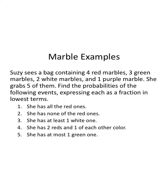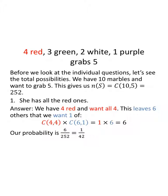Susie sees a bag containing four red marbles, three green marbles, two white marbles, and one purple marble. She grabs five of them. We're going to find these five probabilities. So we have four red, three green, two white, one purple, and she's grabbing five. Before we look at the individual questions, let's see the total possibilities. Four and three make seven, plus two makes nine, plus one makes ten.